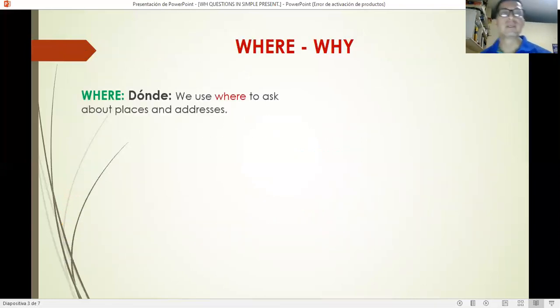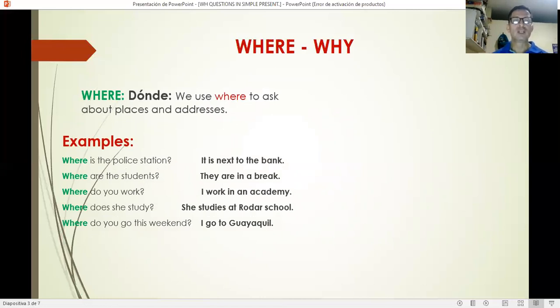WHERE and WHY. WHERE means dónde. We use where to ask about places and addresses. Examples: Where is the police station? It is next to the bank. Where are the students? They are in a break. Where do you work? I work in an academy. Where does she study? She studies at Rodar school. Where do you go this weekend? I go to Guayaquil.